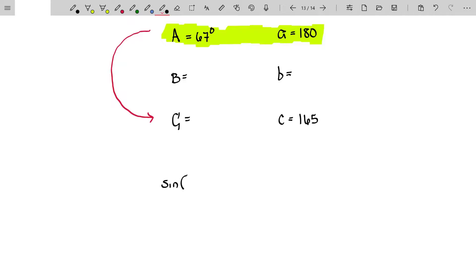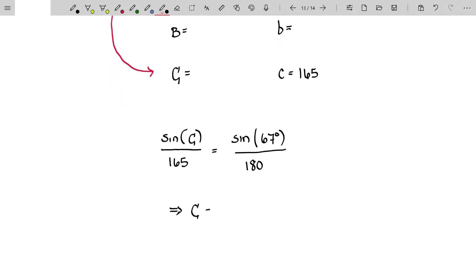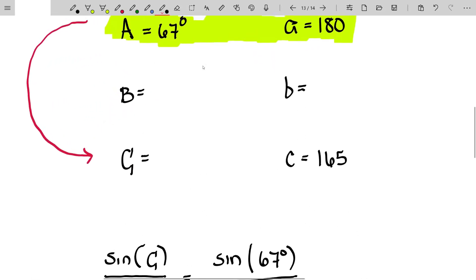So let's just go ahead, use our law of sines and not worry about the ambiguous possibility here. Sine of angle C is to its side 165 as sine of angle A, 67 degrees, is to its side 180. This tells us that angle C is the arc sine of 165 sine of 67 degrees divided by 180. And now I'm going to just grab a calculator and compute this out. And actually this is one of those that I should use Desmos to show you.